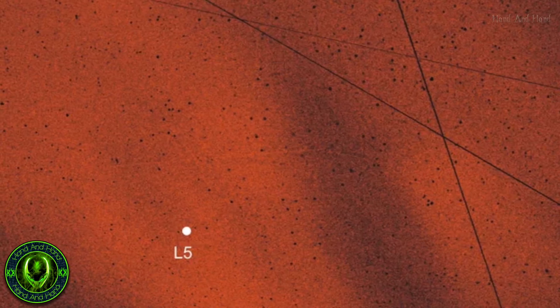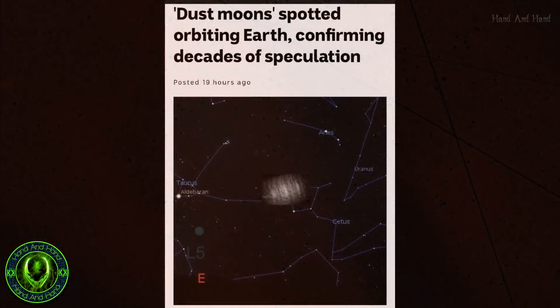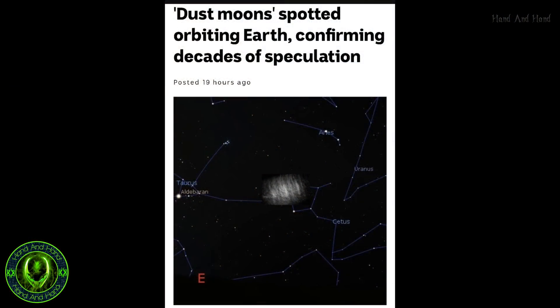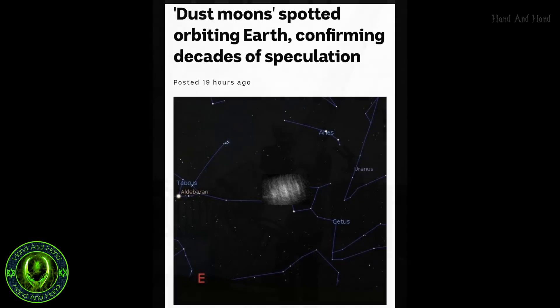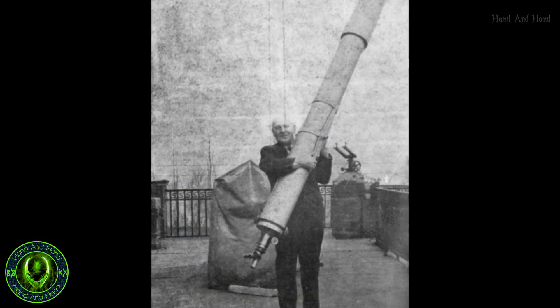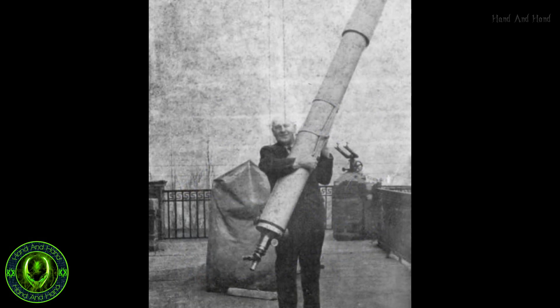Researchers previously inferred the presence of multiple natural companions to Earth, but the dust clouds weren't actually seen until 1961, when their namesake, Polish astronomer Kazimierz Kordylewski, got a glimpse.